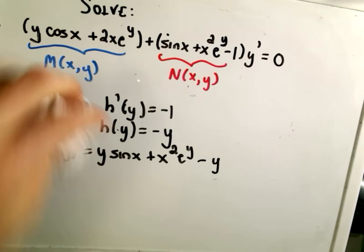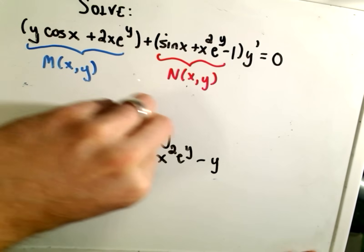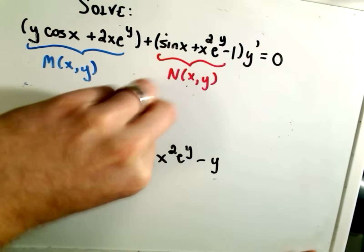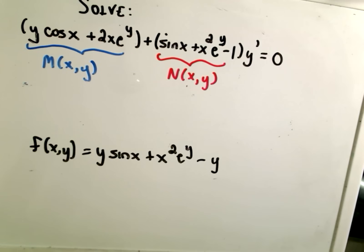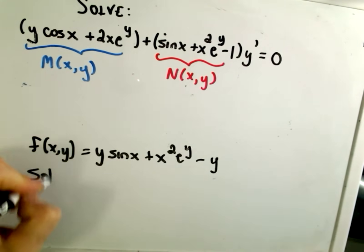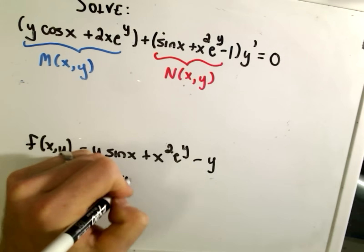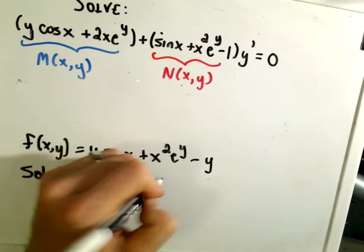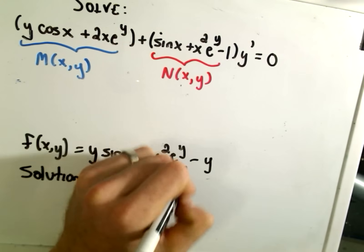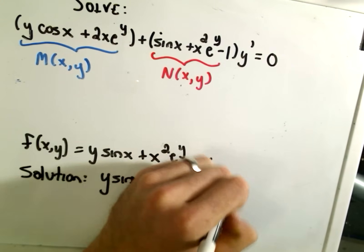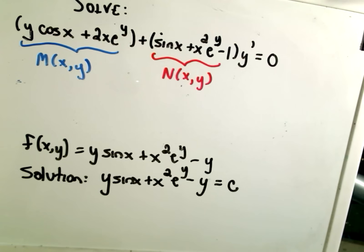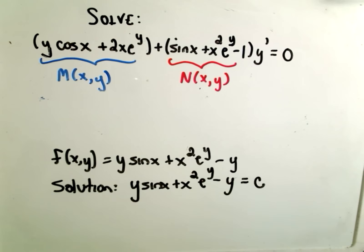This is now our solution. Okay, so what we do now to get our final solution to this problem is we have an implicitly defined solution, but that's okay. We just set this simply equal to some arbitrary constant c, and that is now our answer.